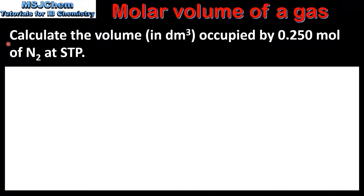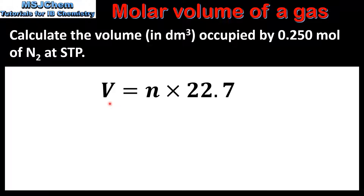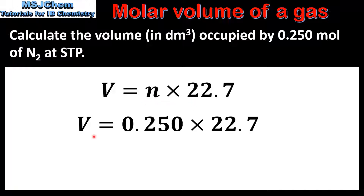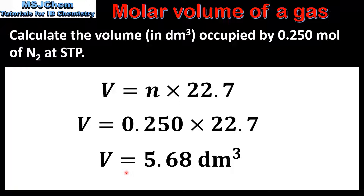In the first example we'll calculate the volume in decimetres cubed occupied by 0.250 moles of nitrogen gas at STP. The equation we'll use is volume equals amount in moles multiplied by the molar volume. So the volume is equal to 0.250 multiplied by 22.7, which gives a volume of 5.68 decimetres cubed. Note that the unit of volume in the answer is the same as that in the question, which is decimetres cubed.